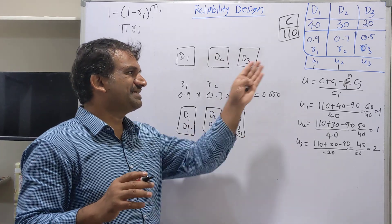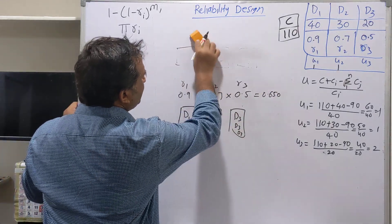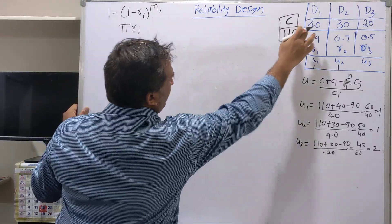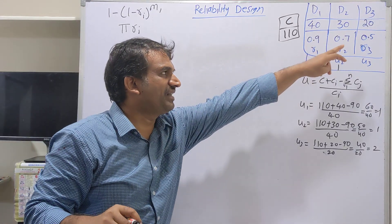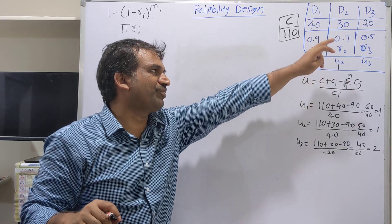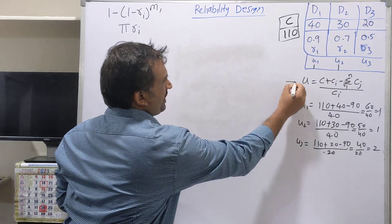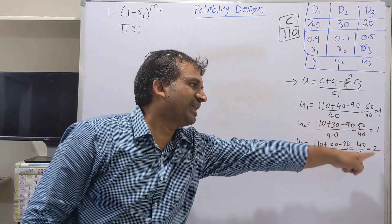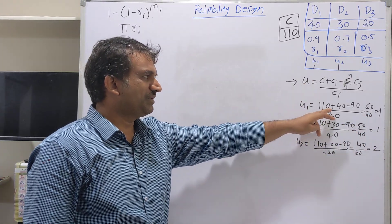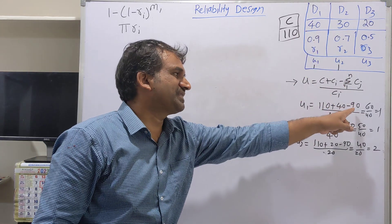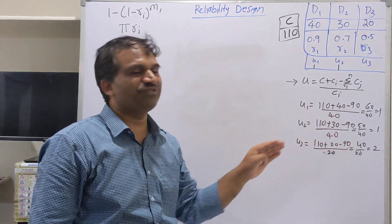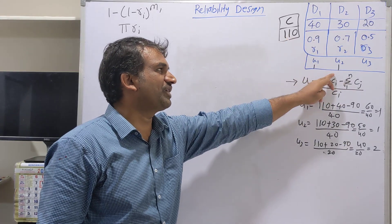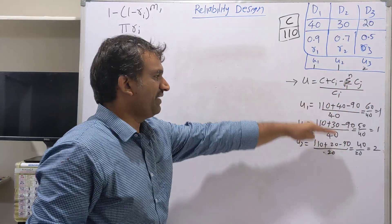Let us illustrate the reliability design problem with a simple example. Consider a problem with 3 devices where the device costs are 40, 30, and 20, and the reliability values are 0.9, 0.7, and 0.5. First, calculate how many duplications can be done using the formula: (total cost + individual device cost − sum of all device costs) divided by individual device cost. Substituting gives maximum copies of 1, 1, and 2.